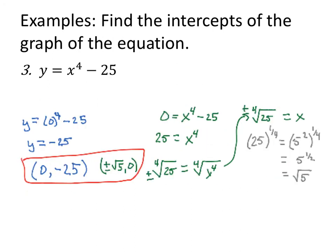Our last example, let's make it challenging. The y-intercept replaces the x-value with 0. 0 to the fourth power, that's 0. 0 minus 25 is a negative 25. So that, 0 comma negative 25. x-value 0, y-value negative 25 corresponds to it. That's my y-intercept.